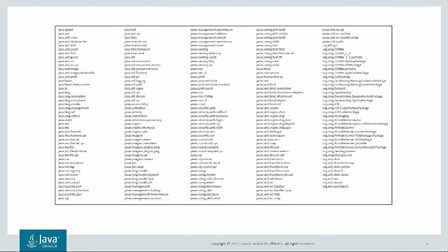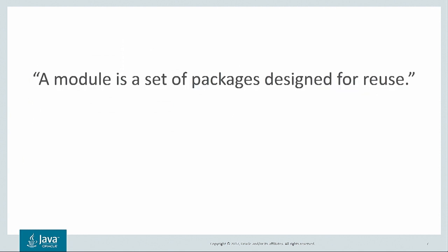Just imagine how difficult it is to control reuse within a really large code base, like the 217 official packages shown here from JDK 8. The only way to share code between packages is with the public modifier, but then the code is shared with everyone. A package is a great way to organize classes, but most people wish there was a way to organize packages too. Modules let you do that. A module is a set of packages designed for reuse. This is a long-overdue building block in the Java language.